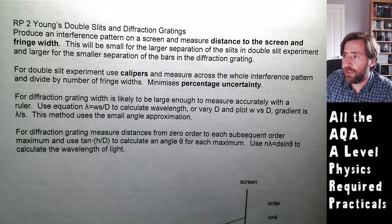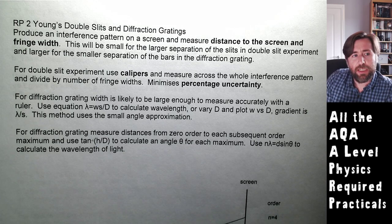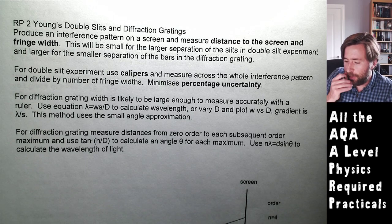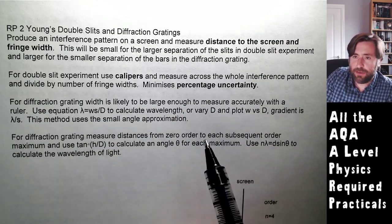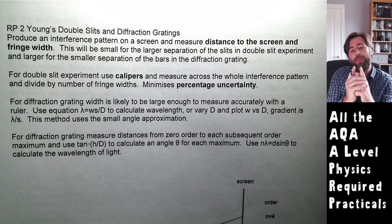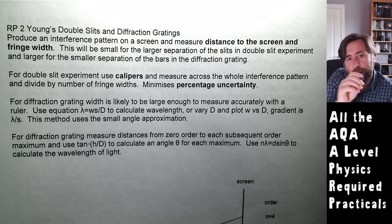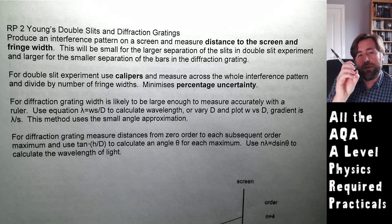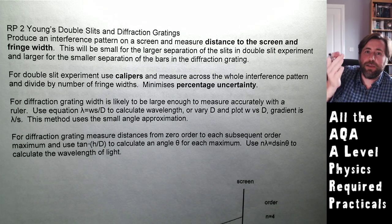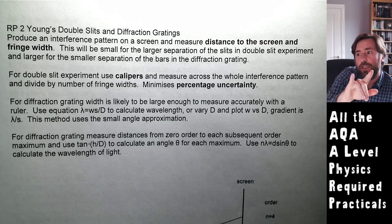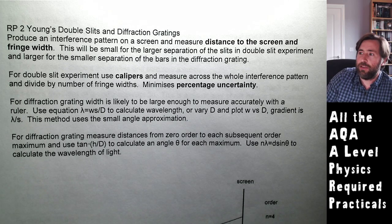Young's double slits is one people don't really like. AQA do it with both a double slit and a separate diffraction grating as two separate experiments. For the double slit, you get a fringe pattern that's very small - even a couple of metres away it's only around 10 centimetres wide on the screen. You count the number of fringes, measure the whole width, and divide the total width by the number of fringes to get the fringe width, minimising percentage uncertainty.